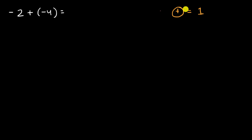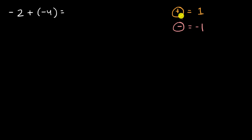And if I have a negative sign with a circle around it, that's a negative integer chip, and that's equal to negative one. Of course, if I have exactly one positive integer chip and one negative integer chip, they're going to cancel out because positive one plus negative one is equal to zero. So let's use that to figure out this and several other problems.